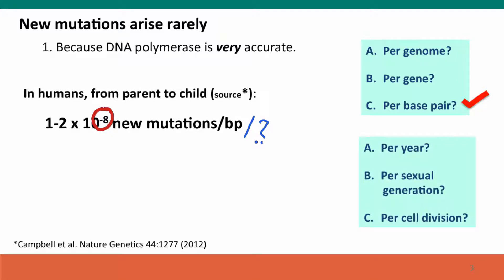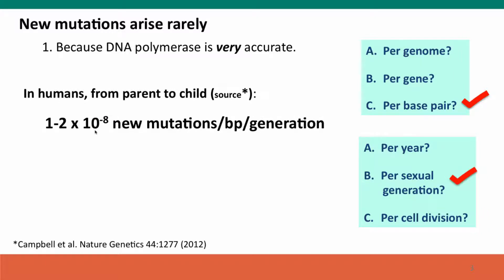Per year? Per generation? Per cell division, which is effectively a DNA replication? The answer is it's 1 to 2 times 10 to the minus 8th new mutations per base pair per generation.